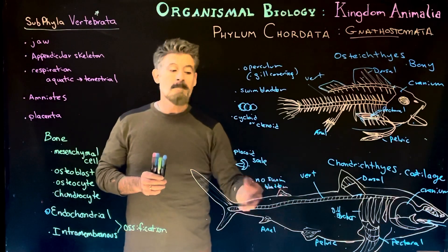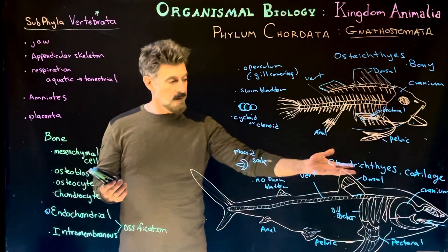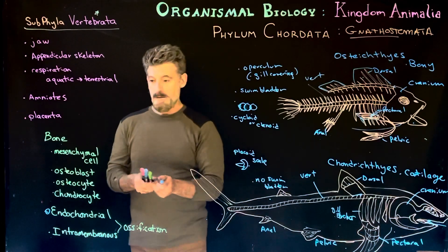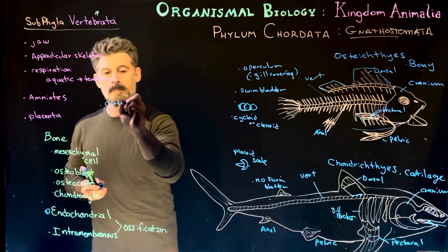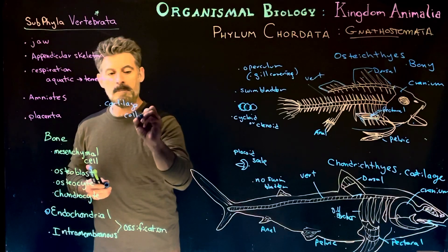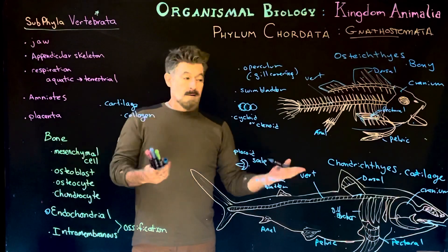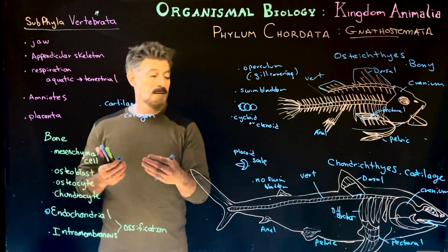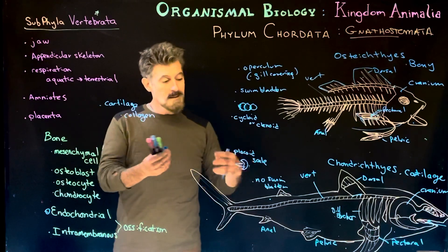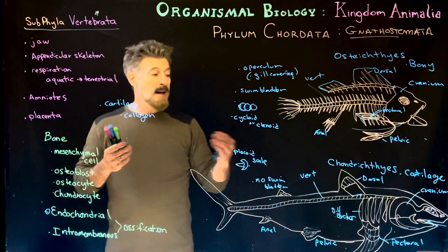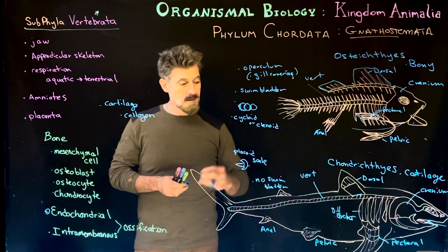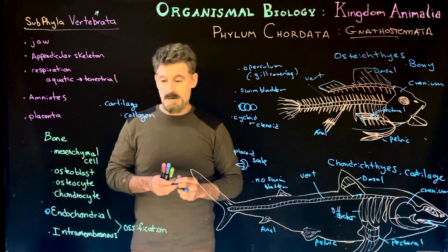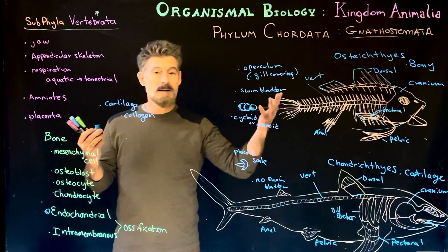The chondrichthyes build a skeleton entirely of cartilage — the cranium, vertebra, and other structures are not bone, they're cartilage. Cartilage is mostly made up of collagen protein; it is not mineralized. The process we are going to study is ossification — chondrichthyes are not ossified, so they stay flexible. Although cartilage can be fairly hard and rigid depending on thickness and chemical properties, it generally maintains a lot of elasticity and flexibility.